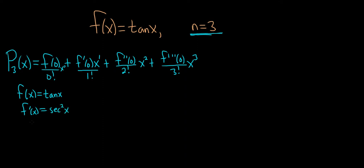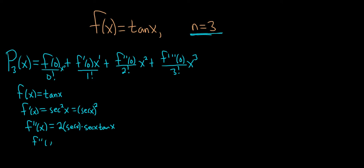Now we have to take the derivative again, which gets more challenging quickly. For the second derivative, note you can think of secant squared as secant(x) quantity squared. When you take the derivative you have to use the chain rule — bring the 2 in front, giving 2 times secant(x) times the derivative of the inside. The derivative of secant is secant tangent, so this becomes 2 secant squared(x) tan(x).